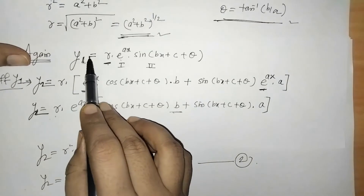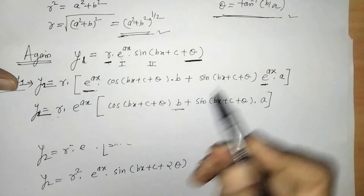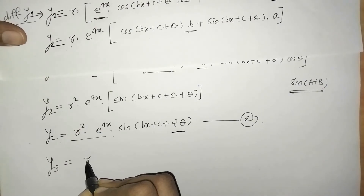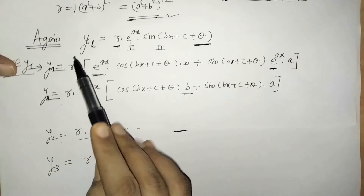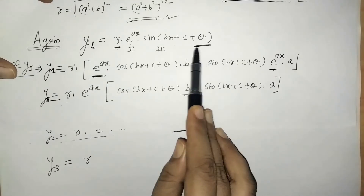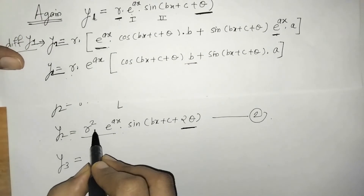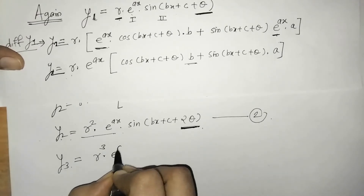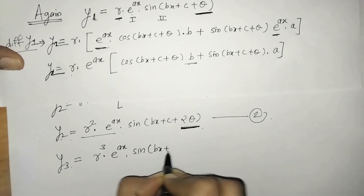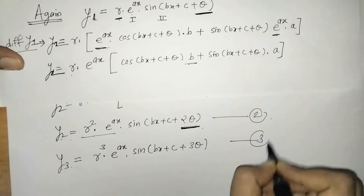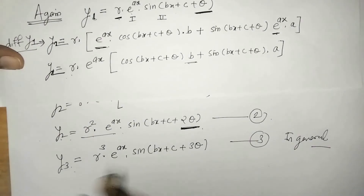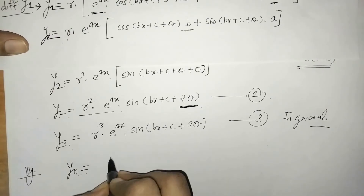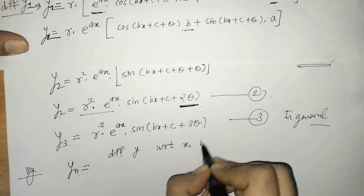In y1 we have r¹ and θ; in y2 we have r² and 2θ. So in general for y3 we would have r³ · e^(ax) · sin(bx + c + 2θ). Similarly we can write yn: differentiating y with respect to x n times, we get yn.